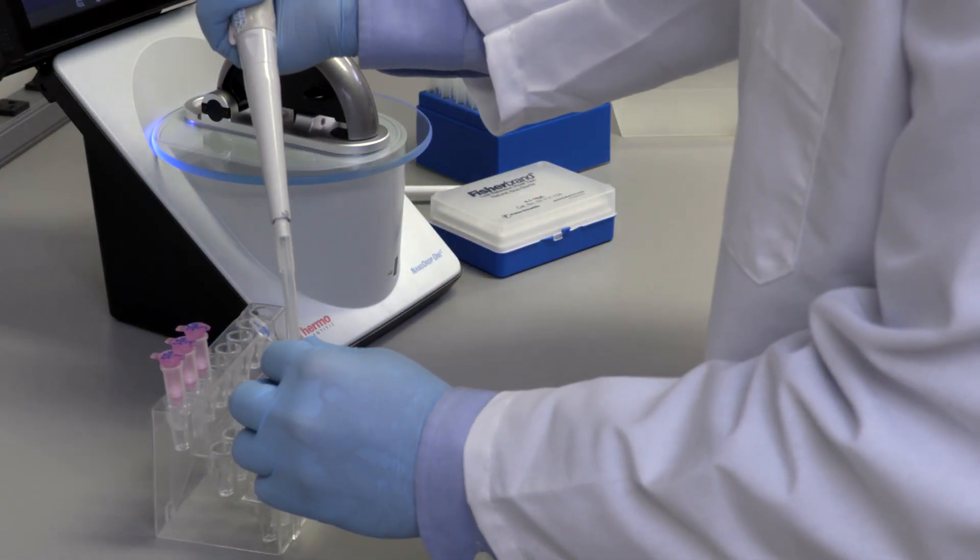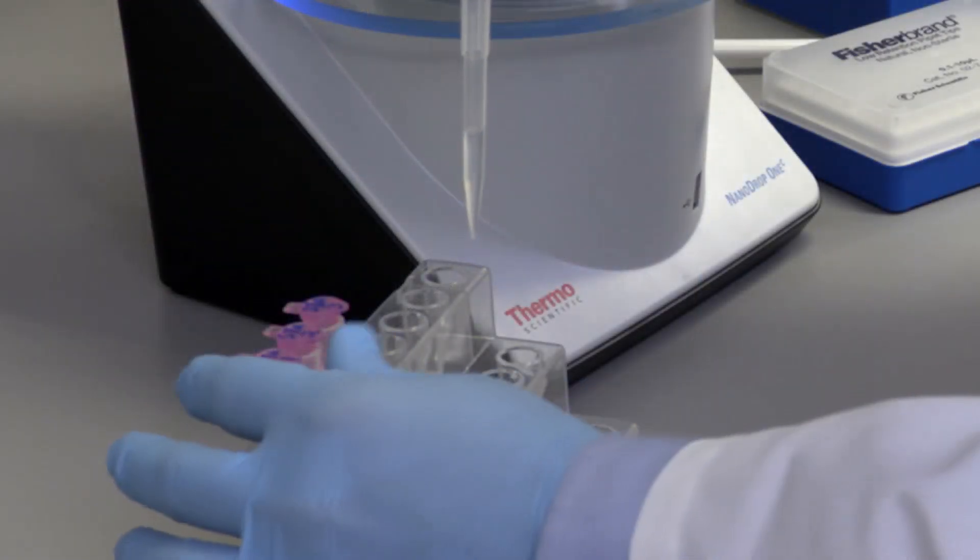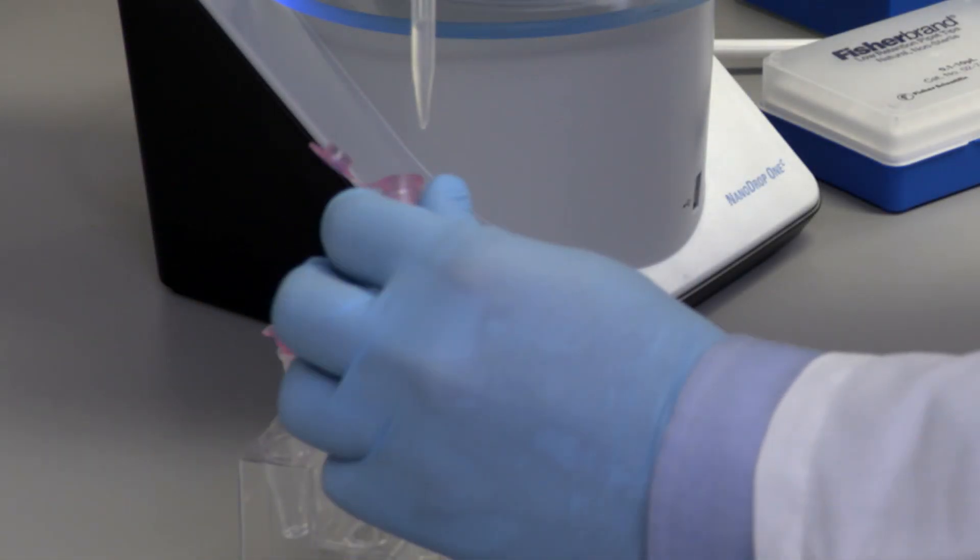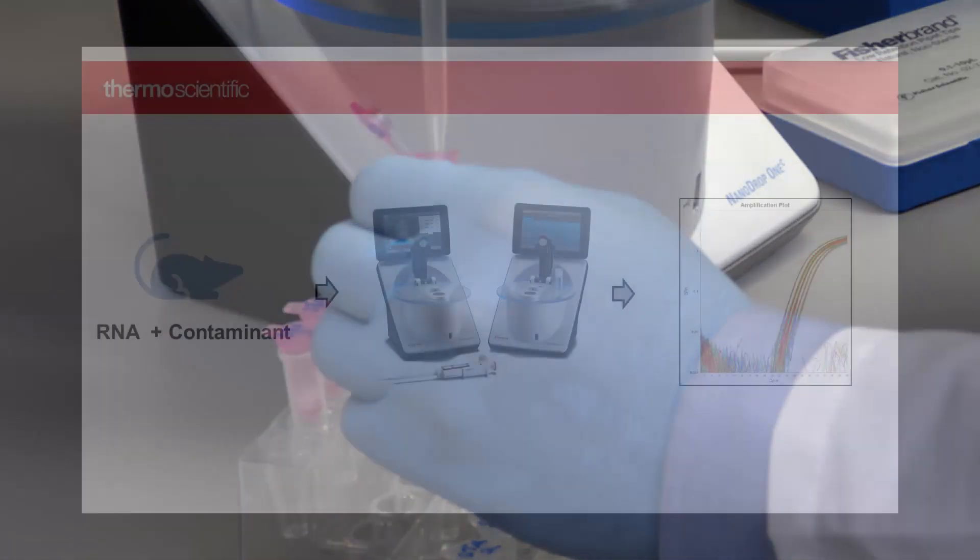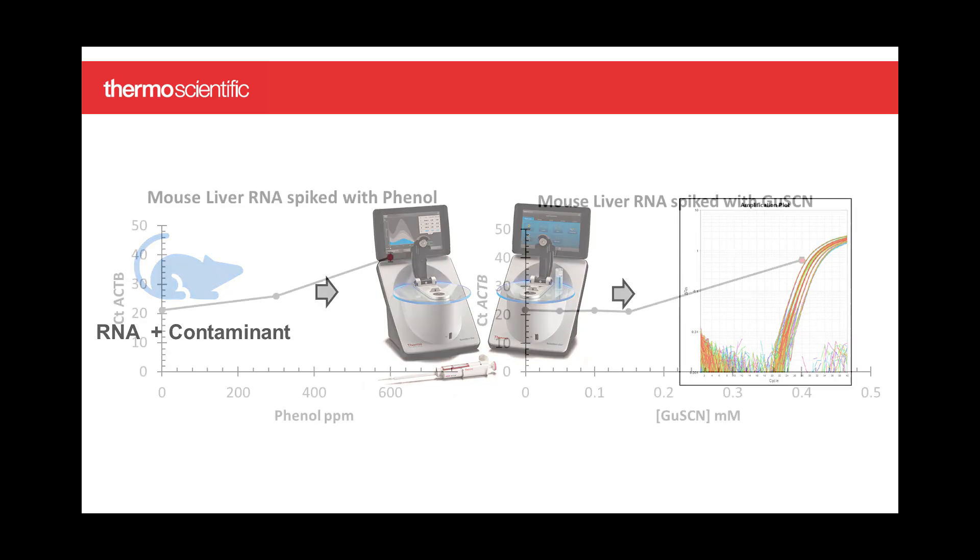Common molecules found in nucleic acid extraction kits can overestimate analyte concentrations or denature qPCR polymerases. To illustrate this, we extracted RNA from mouse liver and spiked it with a contaminant. We used absorbance to determine the analyte concentration and set up a qPCR reaction based on the uncorrected value.